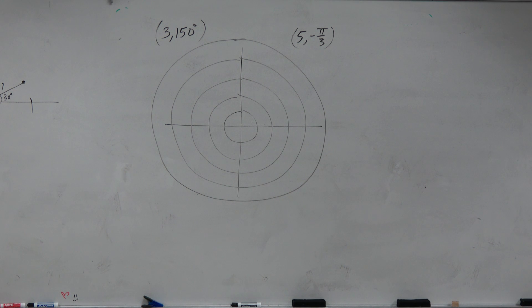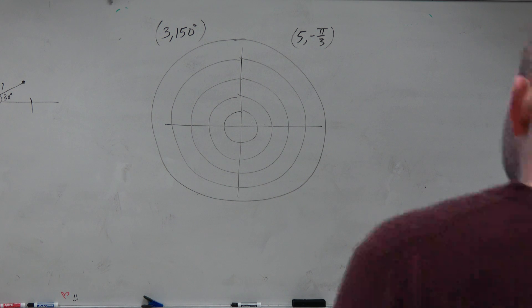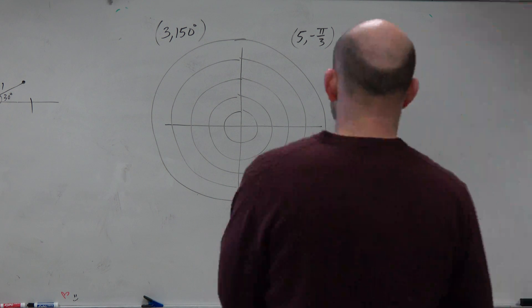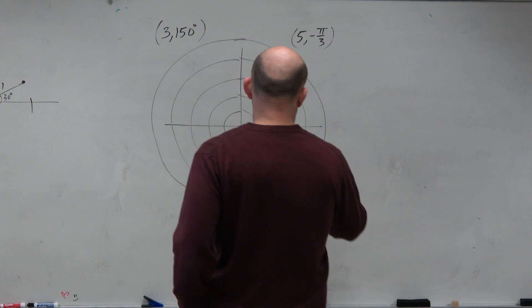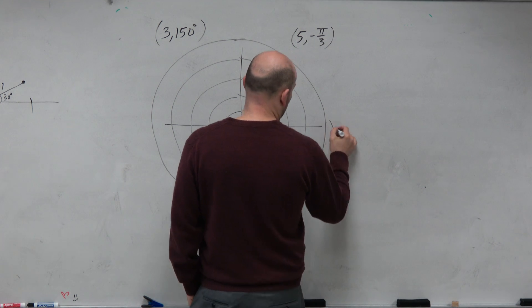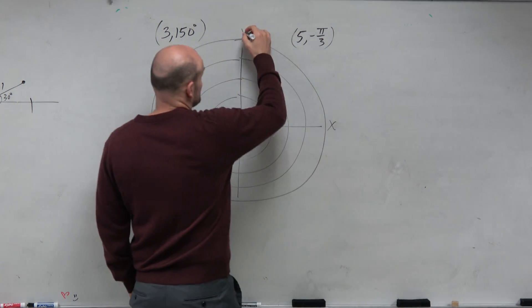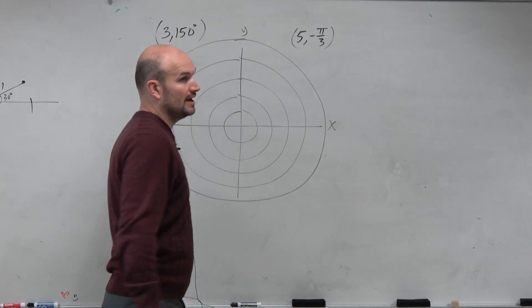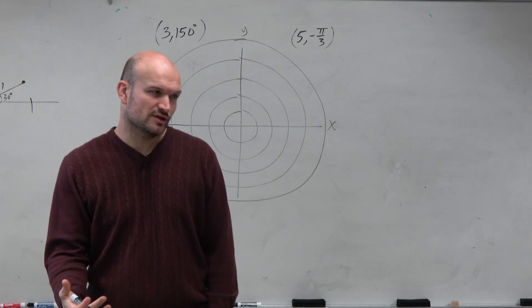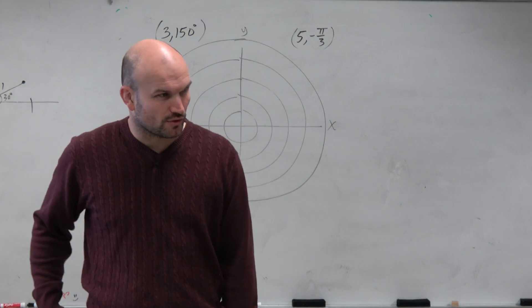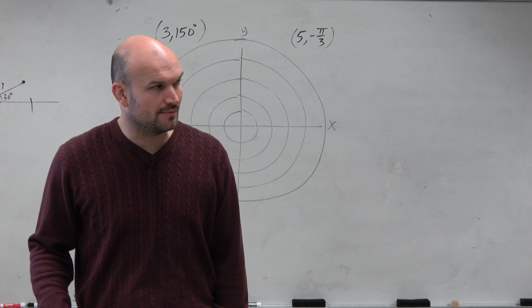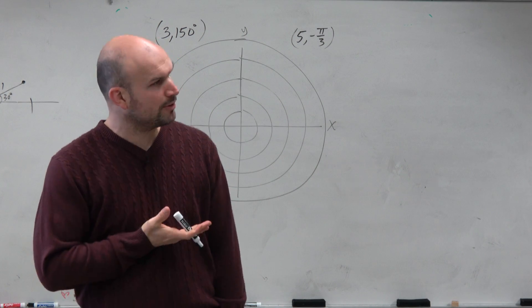So if I wanted to go ahead and plot these points, this is going to be still our xy-axis. But rather than looking for the rectangular coordinates, we're just given a polar point.